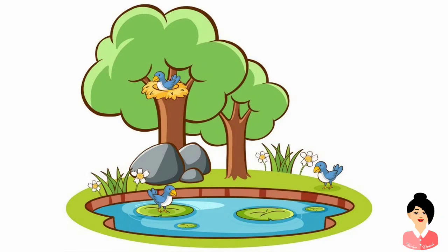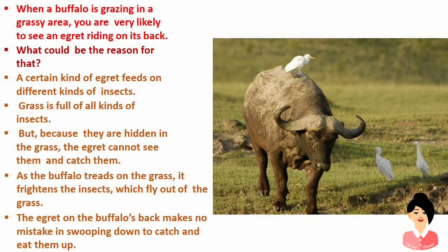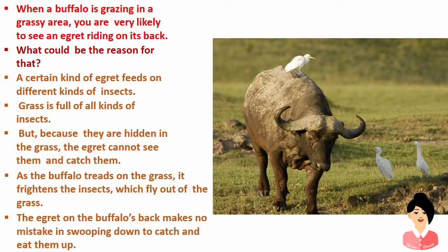Birds also use the trees — they make their nests on the tree. When a buffalo is grazing in a grassy area, you are very likely to see an egret riding on its back. A certain kind of egret feeds on different kinds of insects. Grass is full of insects, but because they are hidden in the grass, the egret cannot see and catch them. As the buffalo treads on the grass, it frightens the insects which fly out. The egret on the buffalo's back makes no mistake in swooping down to catch and eat them up.